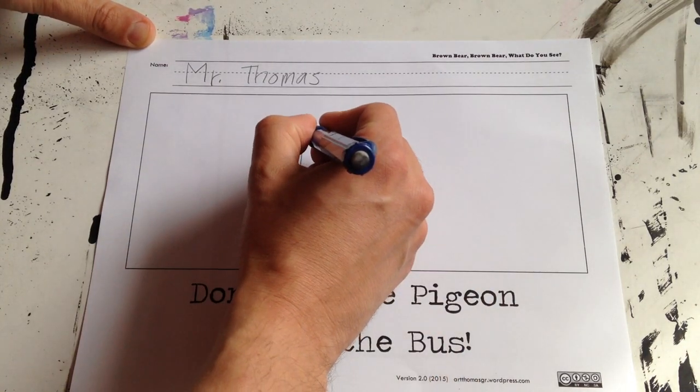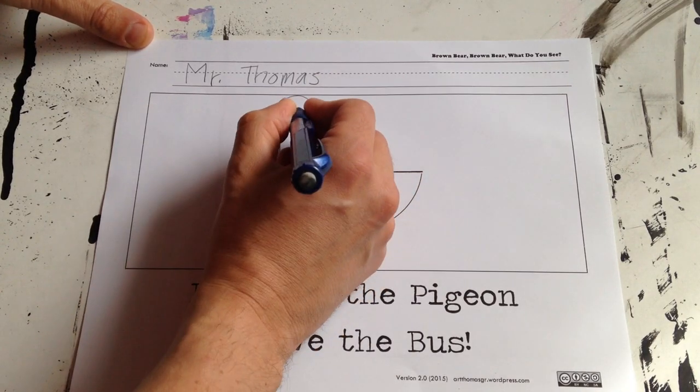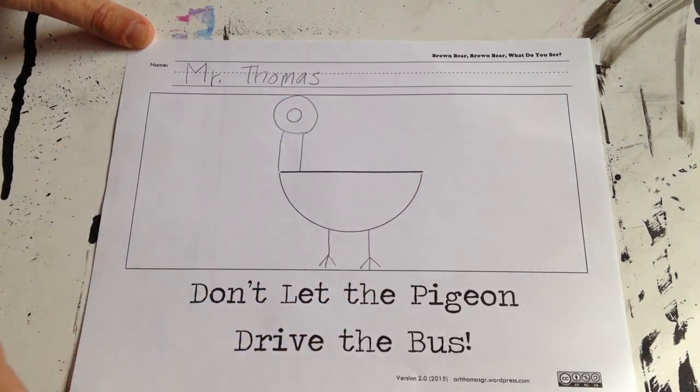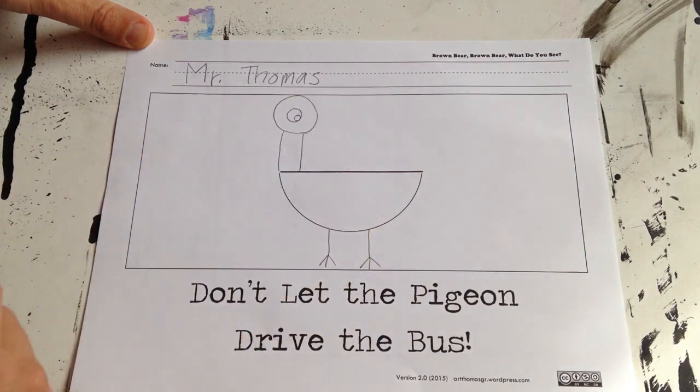And then the circle, a circle for the head. And just like that bear, we're going to use a circle for the eye. You can put it right here for the pupil.